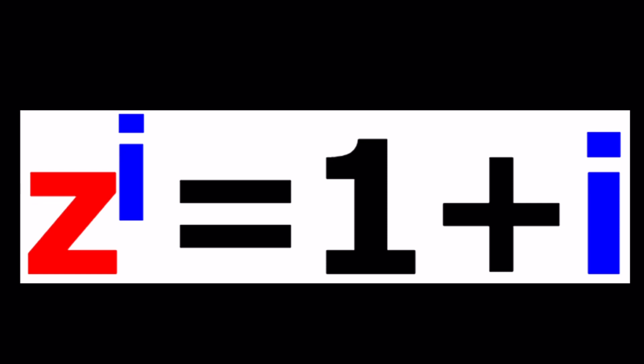We have z to the power i equals 1 plus i and we're going to be solving for z. Now z is such an interesting complex number that when you raise it to the power i you get 1 plus i. So it's equivalent to adding 1 to i. All right so let's go ahead and take a look at how we can solve this problem.